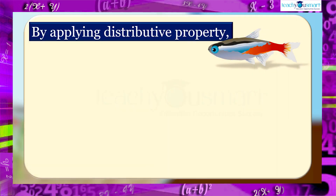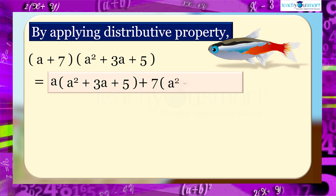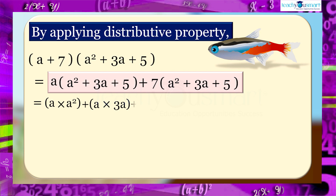Here also, we use the distributive property. (a + 7) multiplied by (a² + 3a + 5) equals a multiplied by (a² + 3a + 5) plus 7 multiplied by (a² + 3a + 5), which gives a multiplied by a², plus a multiplied by 3a, plus a multiplied by 5, plus 7 multiplied by a², plus 7 multiplied by 3a.